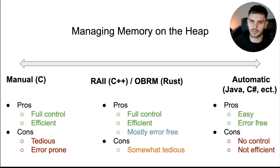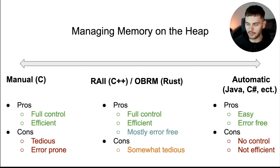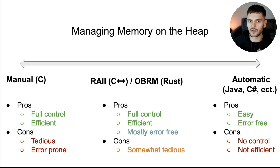On the other side of the spectrum, automatic memory management's pros are that it's easy — memory is managed for you so you don't have to think about it. It's also effectively error-free in that you won't have memory defects that lead to severe security vulnerabilities. The cons are that you have no control over your memory, and your programs won't be as efficient because the garbage collector has to pause execution of your program every once in a while to clean up memory.